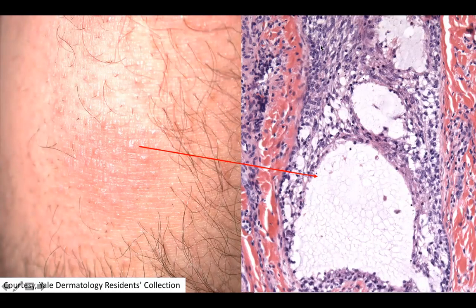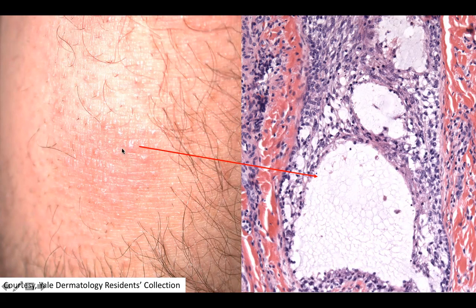Welcome back to DP60. Today we have a CPC of follicular papules. You can see that the follicles look accentuated and there's hair loss.